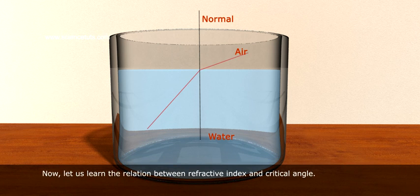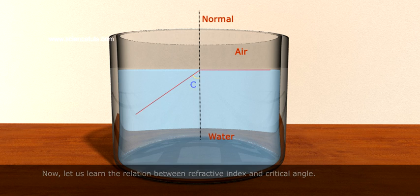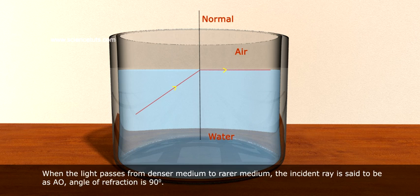Now, let us learn the relation between refractive index and critical angle. When the light passes from denser medium to rarer medium, the incident ray is said to be as AO.